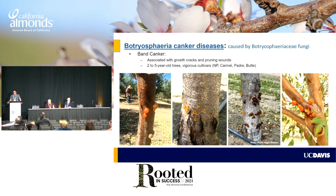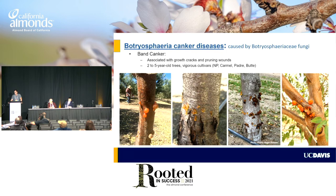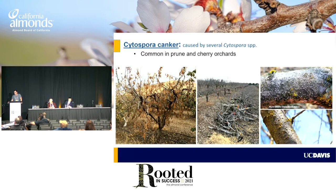Band canker — I'll just provide an overview here because Thames will talk in much more detail — but that's how the disease looks. Its name comes from this band of gumming appearing along the trunk circumference. Usually that disease develops at cracks on the trunk when a vigorous tree grows very quickly in the spring. These cracks may be infection sites, as well as pruning wounds, and it's typically a disease of young trees.